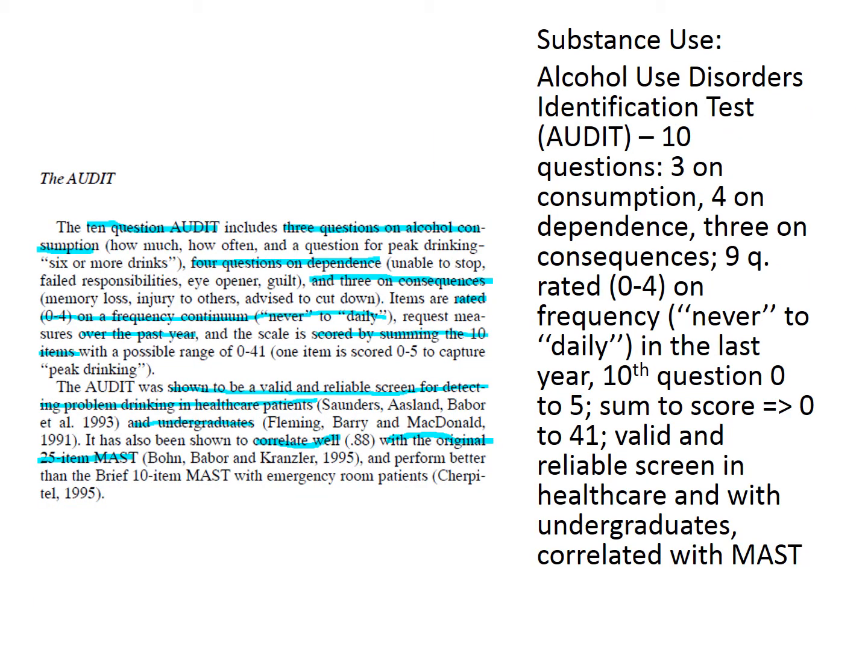We need to keep reading to find the operationalization for substance abuse. It's helpful to remember that the hypothesis listed three ways they operationalize that variable: the Alcohol Use Disorders Identification Test or AUDIT, the Alcohol Change Index, and the frequency of marijuana use.